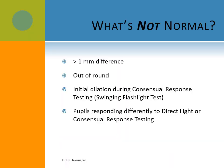What's not normal for pupils? More than a millimeter difference in size — not normal. Out of round — not normal. If during the swinging flashlight test you see initial dilation when you swing over to a pupil, that is not normal. If your pupils respond differently to one another, either during the direct light response testing or the consensual light response testing, that is not normal.